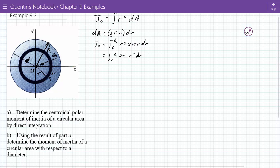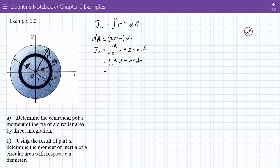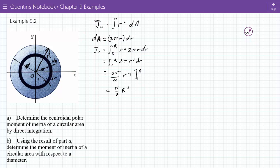So therefore that's equal to 2 pi over 4 r to the fourth from 0 to big R. So that is equal to pi over 2 r to the fourth. The polar moment of inertia of this bad boy is pi over 2 capital R to the fourth. That's part A.